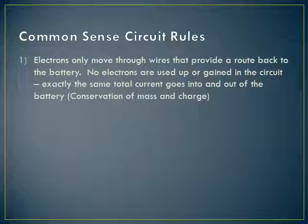The first is that the electrons stay in the wires — they stay inside the conductors. They can't escape out of those wires or out of the resistors, and they stay in the wires that provide a route back to the battery. No electrons are used up or gained in the circuit. The principles of conservation of mass and charge tell us we can't create or destroy electrons, so we're not using up the electrons — what we're using up is the energy. The same amount of current that comes out of the battery has to go back in the other side.